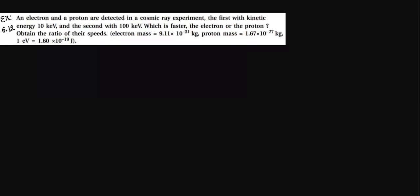The first with kinetic energy 10 kilo electron volt and second with 100 kilo electron volt. So kinetic energy of electron KE = 10 keV and kinetic energy of proton KP = 100 keV. Which is faster, the electron or proton?